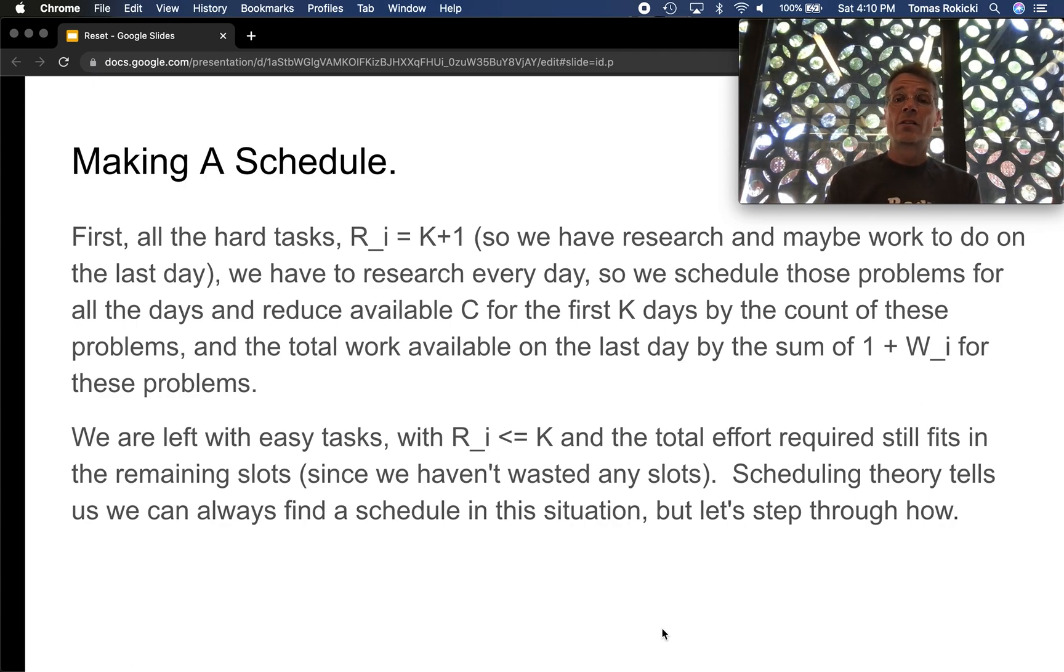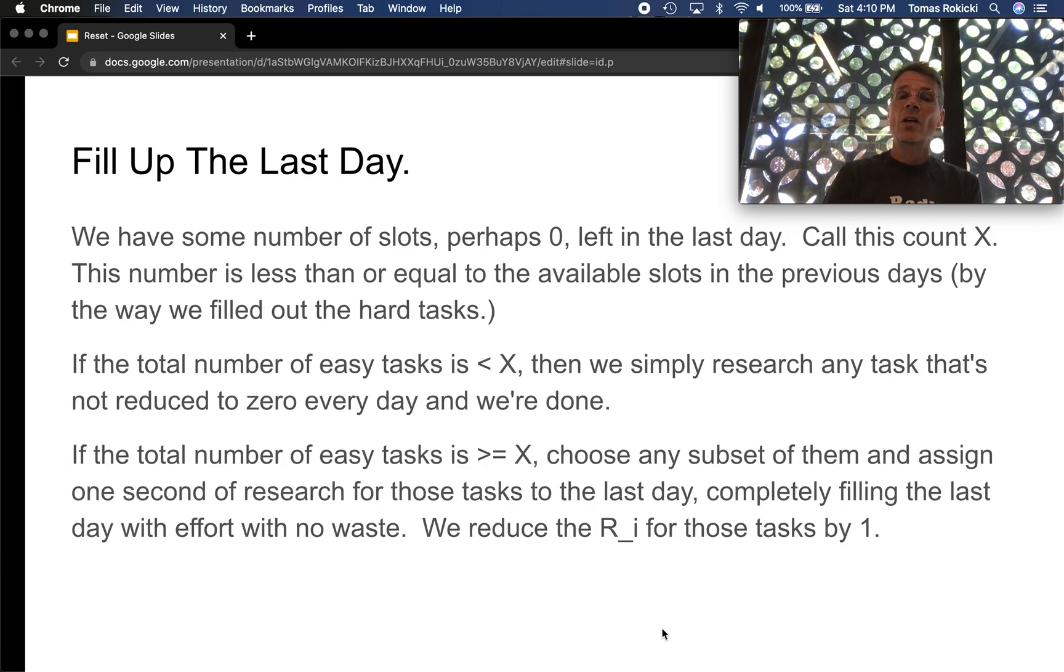Then we're left with just the easy tasks. The total effort required still fits somehow in the remaining slots and we're going to show how. We haven't wasted any slots yet. Scheduling theory tells us we can always find a schedule in this situation but let's step through how. Our first thing is to fill up the last day. We have some number of slots left in last day. Maybe none but there's some number. We call this x. So this number is always going to be less than or equal to the available slots in the previous day because of the way we filled out the hard tasks we always put the same amount or more effort in the last day than we did in the previous day. Therefore the remaining effort in the last day is always going to be less than or equal to the remaining effort in the prior days.